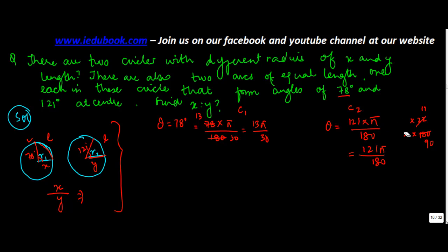Now you know that the length is equal to r1 theta, or x theta in the first case, and r2 theta, or y into 121 pi by 180 in the second case.